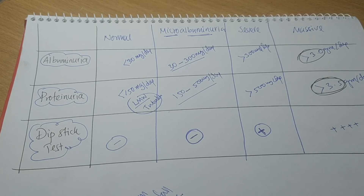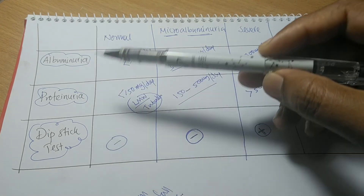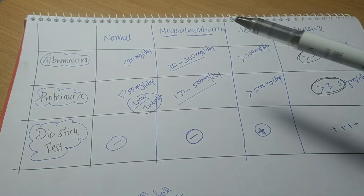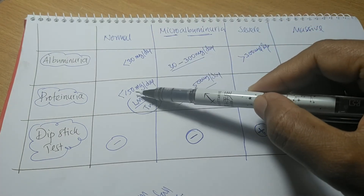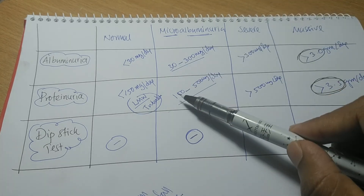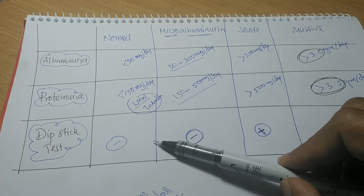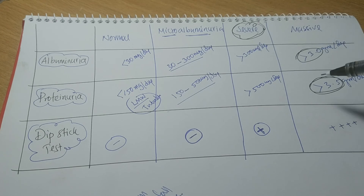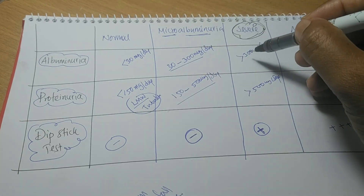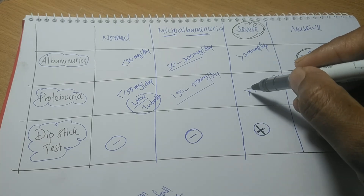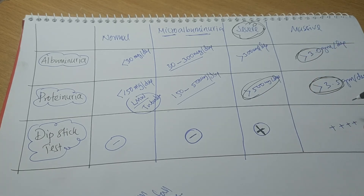To recapitulate: Normal albuminuria is less than 30 mg per day, and proteinuria is less than 150 mg per day. Remember that albumin is included inside total protein. Microalbuminuria is when albumin ranges from 30 to 300 mg and proteinuria from 150 to 500 mg per day — dipstick test is negative here. Severe albuminuria (though this term has limited clinical importance) is when albumin is more than 300 mg and proteinuria more than 500 mg per day — at this stage, the dipstick test becomes positive for the first time. Massive proteinuria is when more than 3.5 g per day passes through urine, and massive albuminuria is when more than 3 g per day passes through urine.